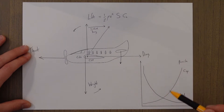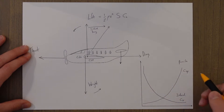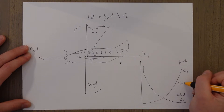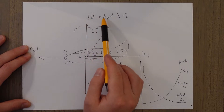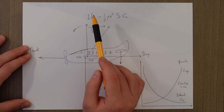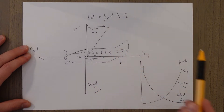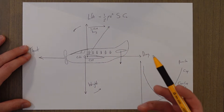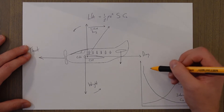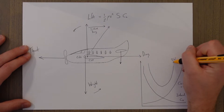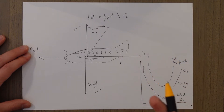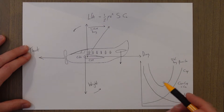So we've got the two elements of drag — parasitic and induced — and we can get a value for total drag if we just add the induced and the parasitic to get an overall coefficient of drag, which we then substitute in to calculate drag using: drag equals a half rho v squared times S times CD. On a graph the total drag looks something like a U-shaped curve.